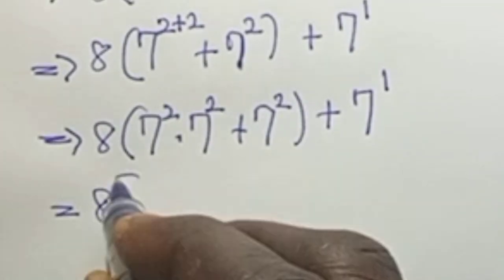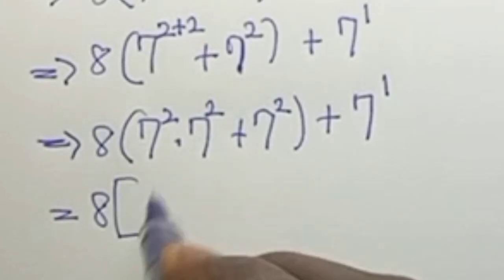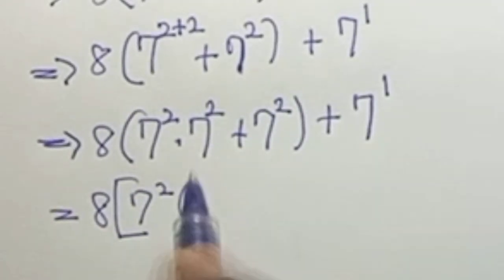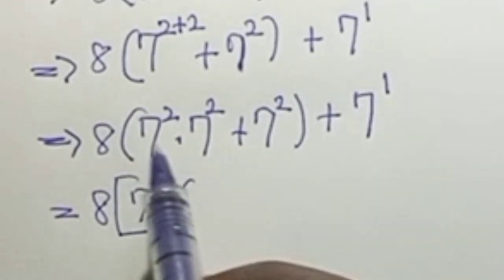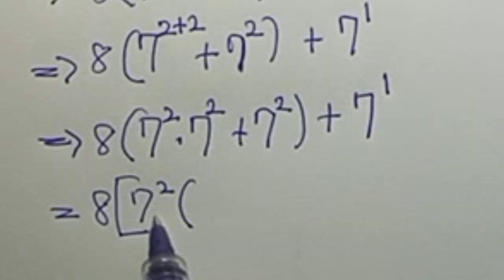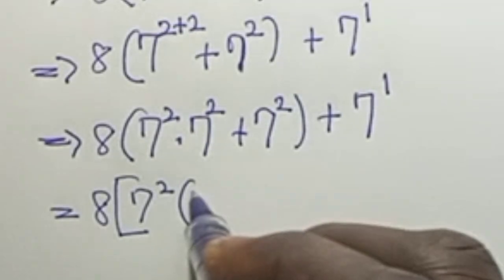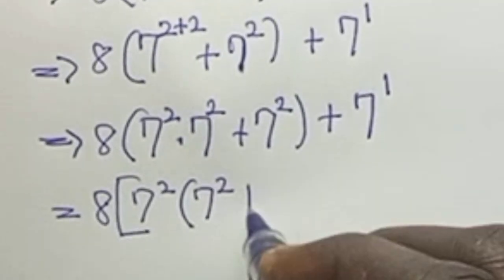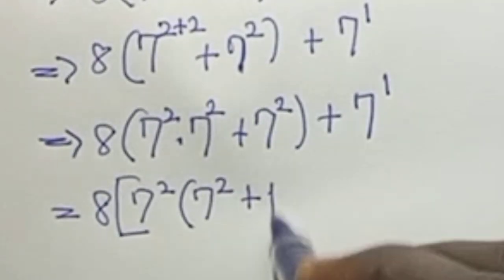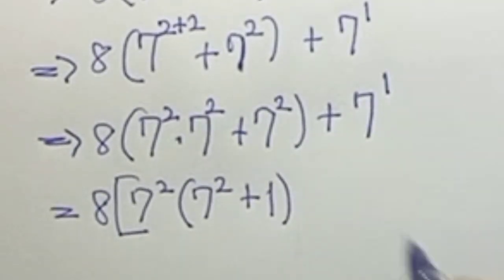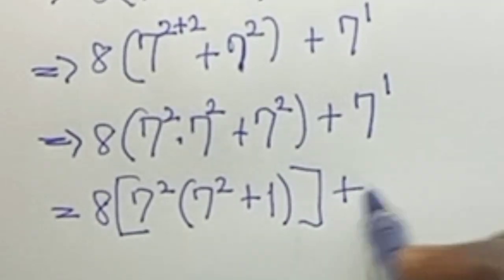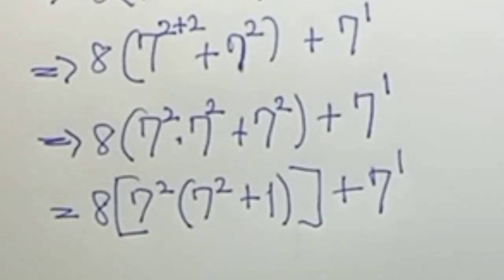Now what is common inside the bracket is 7 to the power of 2. Factoring it out: 8 times 7² times the quantity 7² plus 1, close the bracket, plus 7 to the power of 1.